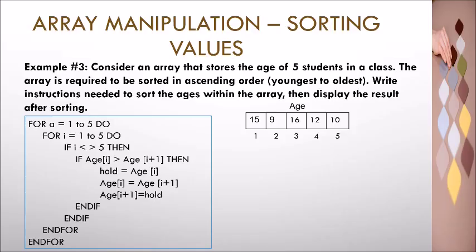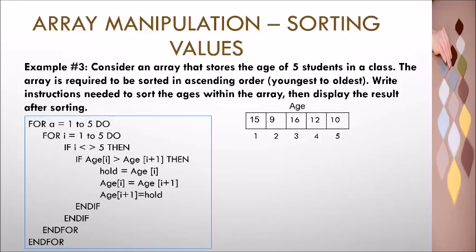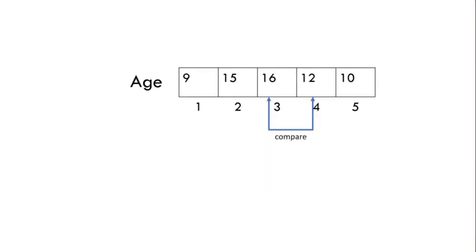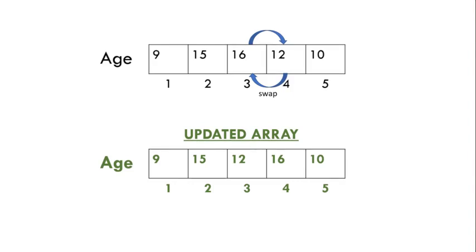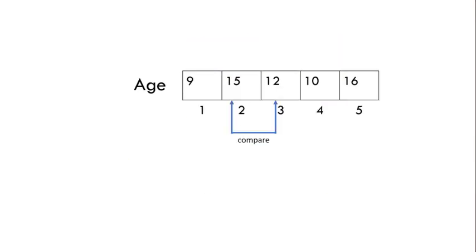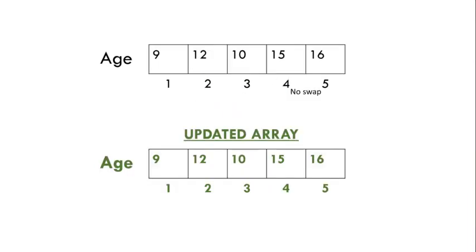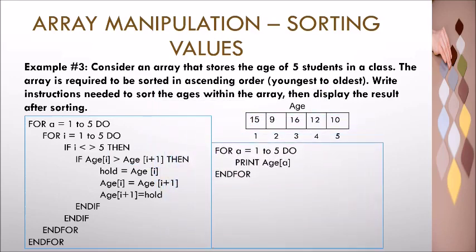After the swap, the second and third elements are compared. Because the second element is now fifteen compared to the third element sixteen, no swap will occur, and the loop continues comparing the third to fourth element. If the counter variable is five, no comparison will be made as there is no sixth element. The outer for loop then repeats the process, traversing the array multiple times to ensure all values are in their correct order. Once the outer for loop achieves its total number of iterations, it is terminated using the outer 'end for' keyword.